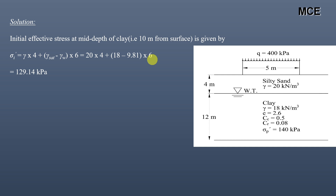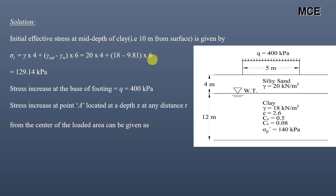Before construction, the initial effective stress is 129.14 kPa. After the footing is constructed, there will be an increase in stress. The stress increase at the base of the footing is 400 kPa, but we need to find the stress increase at the center and edge at mid-depth of the clay. The stress increase at a point at depth z and radial distance r from the center is given as Δσ = q × (A′ + B′), where A′ and B′ are functions of z/R and r/R.